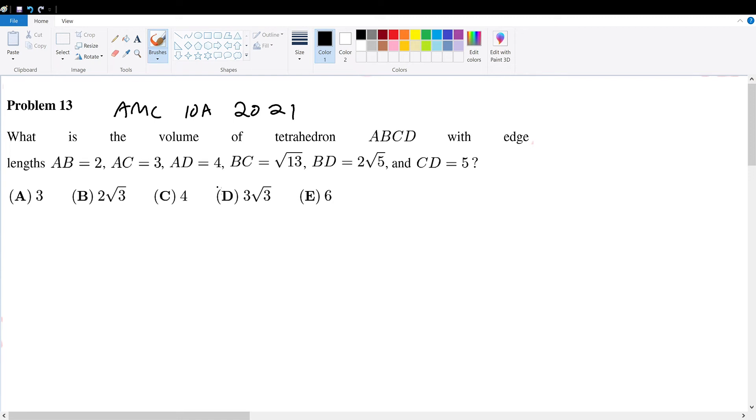AMC 10 2021 problem 13: What is the volume of the following tetrahedron given the following properties? The tetrahedron is simply three triangles in three-dimensional space, so we have this tetrahedron right here. This is poorly drawn, but you'll get the idea.